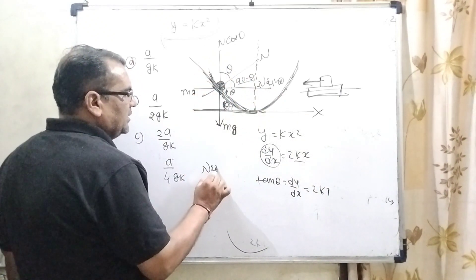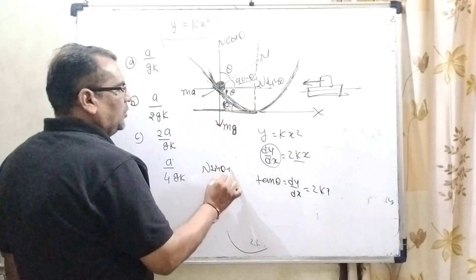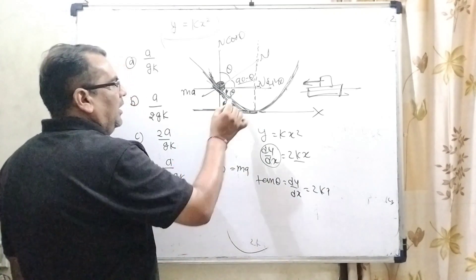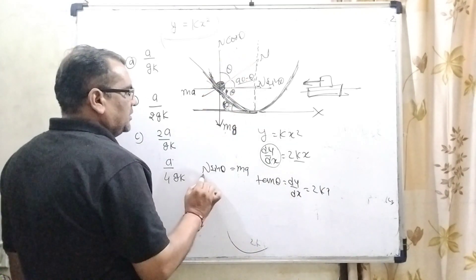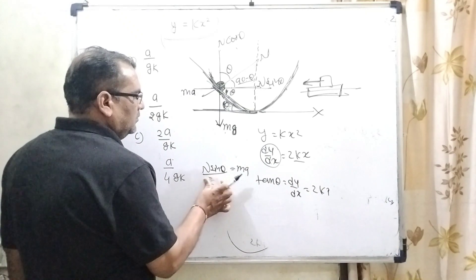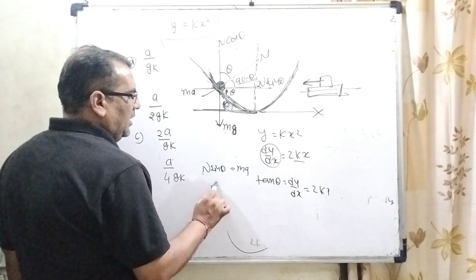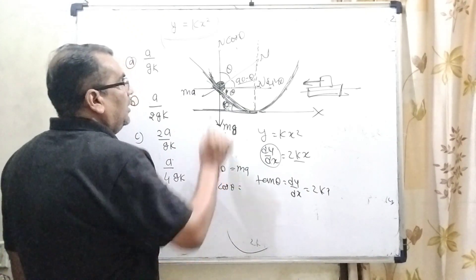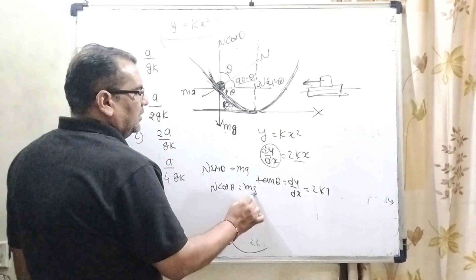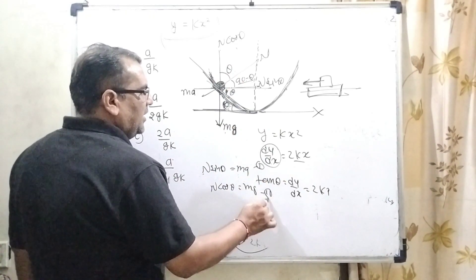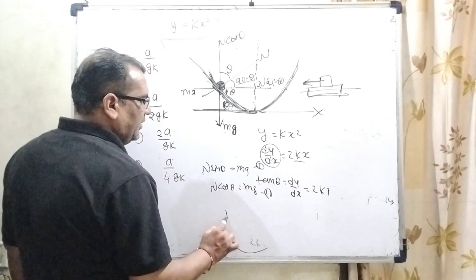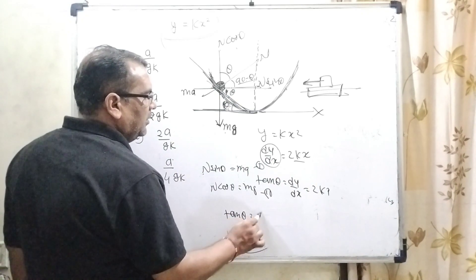So here n sin theta equals ma, and here n cos theta equals mg. This is the first equation, this is the second equation. Divided by first and second, we get tan theta equals a by g.